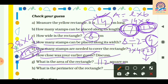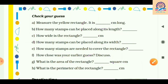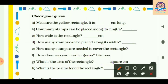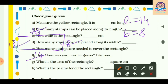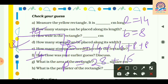Now let's find the perimeter of the rectangle. The length is 14 centimeter and breadth is 8 centimeter. Using the formula — perimeter equals sum of all sides — for a rectangle it is 14 plus 14 plus 8 plus 8. Adding these: 14 plus 14 plus 8 plus 8 equals 44 centimeter. So the perimeter of the rectangle is 44 centimeter.